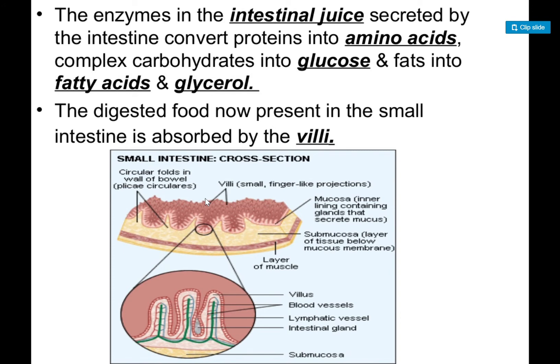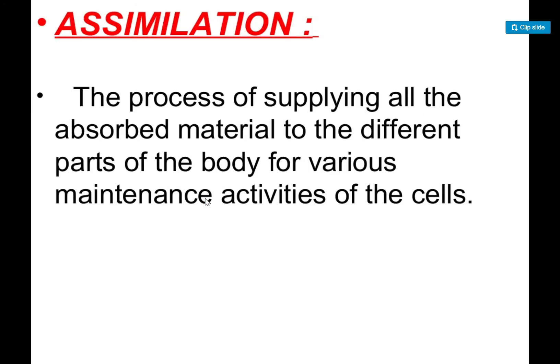After absorption, our next process is assimilation. We have digested food, and all our cells have received particles of food. We have to use those particles in different ways — for energy, growth, and repair. When we use them in different ways, that is known as assimilation.